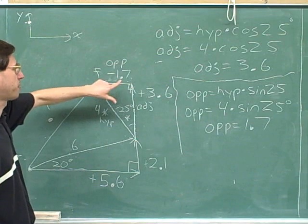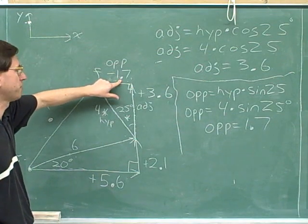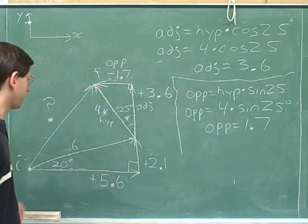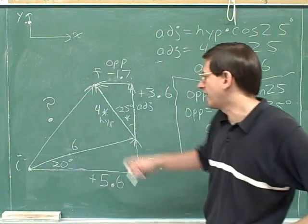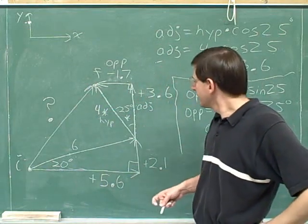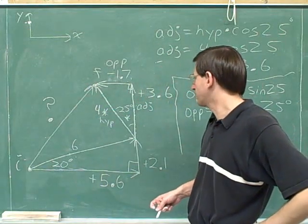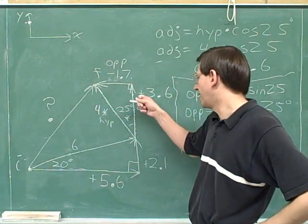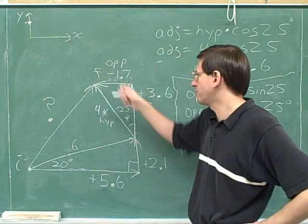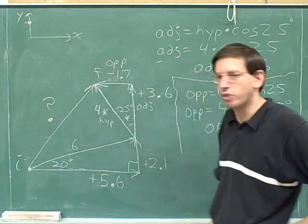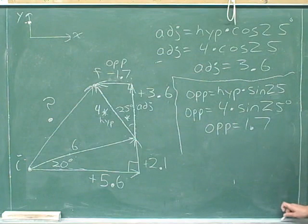That's one part of the problem that some people might have trouble with, so make sure you got that right. For this 4-meter vector, the vertical component was positive 3.6 and the horizontal component was negative 1.7. Now we've worked out all the components.